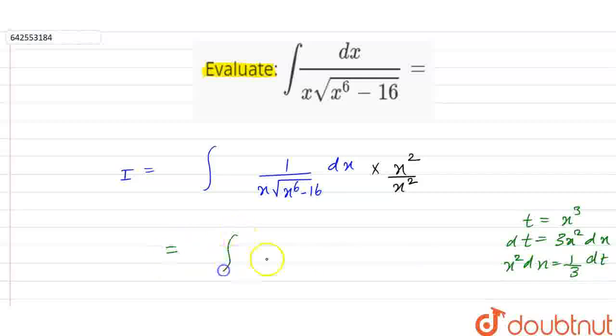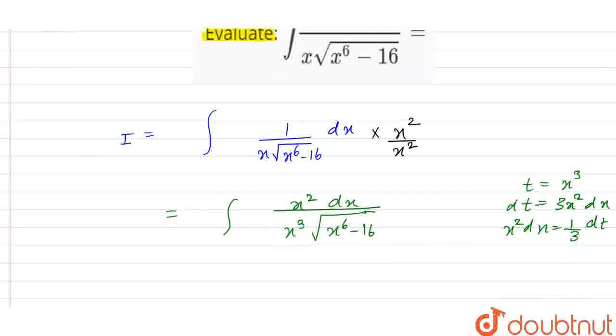We have integral here will be x square dx and in denominator we have x cube under root of x raise to power 6 minus 16 here, x cube whole square minus 4 whole square here. We have this term here is integral of this.